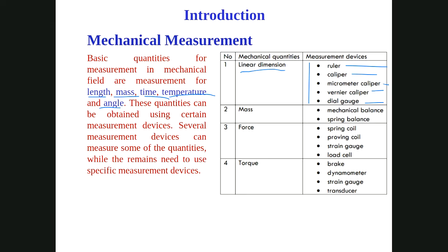Mass can be measured by a mechanical balance or spring balance — popular systems you have seen in daily life. For force measurement, you can use spring methods, coil methods, or strain gauge methods. Strain gauges are used in mechanical engineering to plot stress-strain graphs. There is also a load cell to measure force. For torque, brake methods, dynamometer methods, and strain or transducer methods are used. At this stage you just need to know the names of these measurement devices.